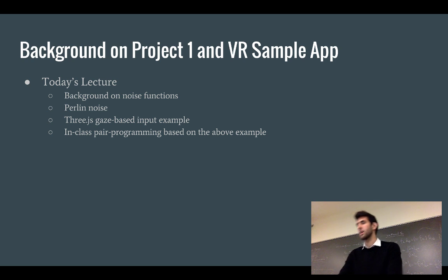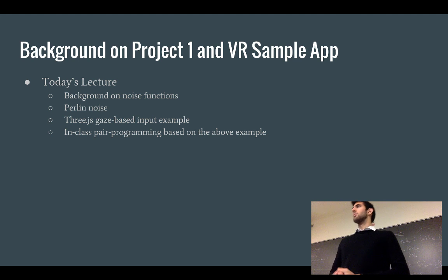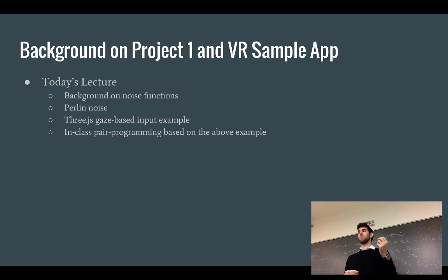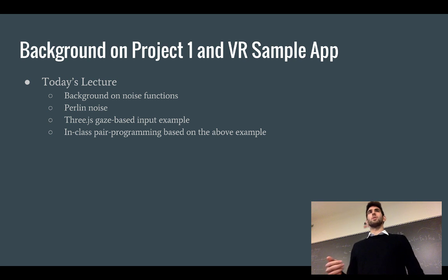One of the key concepts in this first project is Perlin noise or some kind of noise function. What I want to do today is, without really looking at the actual source code, give a little bit of background on what Perlin noise is and how the concepts behind Perlin noise work — and at the same time generalize to other noise functions. For the second half of class, Trung is going to show you some basic VR concepts he has coded in Three.js, and you'll build upon what he's done in teams of two or three.